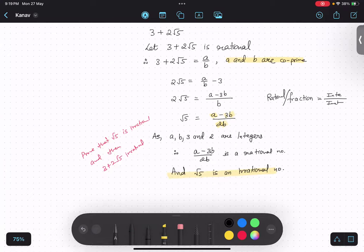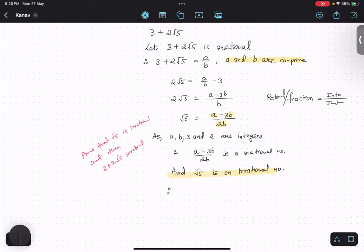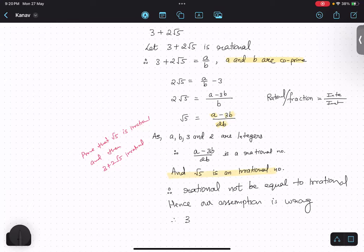And root 5 is an irrational number. Therefore, rational cannot be equals to irrational. Hence, our assumption is wrong. Therefore, 3 plus 2 root 5 is irrational.